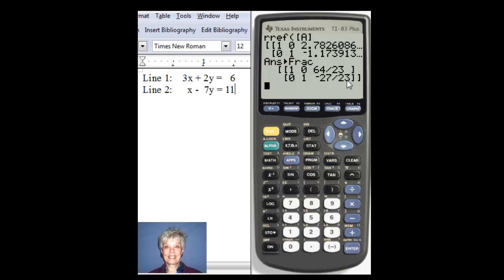I have now solved my matrix. I've solved my system, which means I have found the point of intersection of line 1 and line 2. And that's all there is to it. Have a good day.